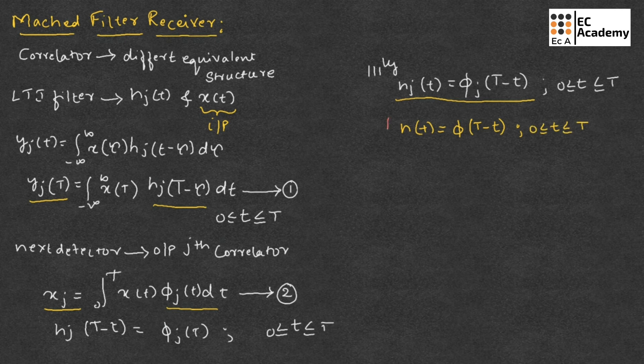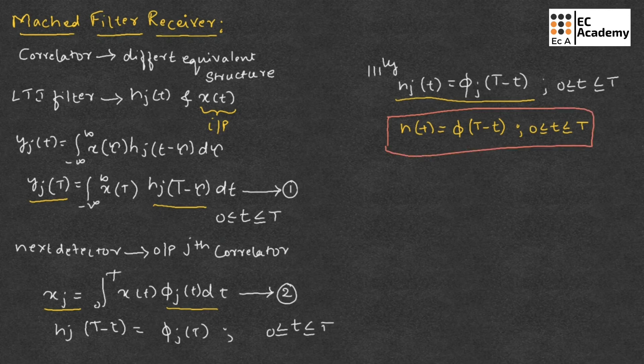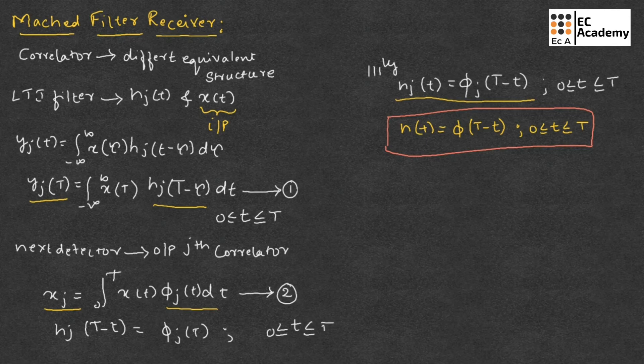The time invariant filter defined in this way is called as matched filter. Correspondingly, an optimum receiver using matched filter in place of correlator is called as matched filter receiver.